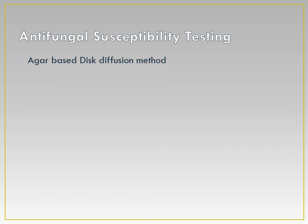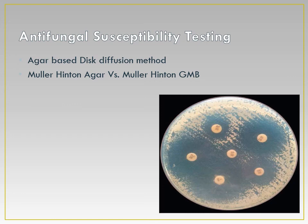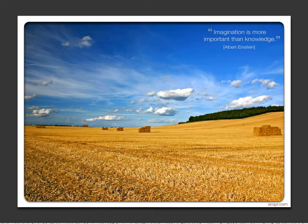For antifungal susceptibility testing, the agar-based disk diffusion method is only useful for yeast. Two agar media are used: Mueller-Hinton agar and Mueller-Hinton glucose methylene blue agar. Mueller-Hinton glucose methylene blue agar is more frequently used and more sensitive, as the fungus zones are more clearly visible compared to plain Mueller-Hinton agar. You can see the picture of antifungal susceptibility testing. This concludes the laboratory diagnosis of fungal infections.